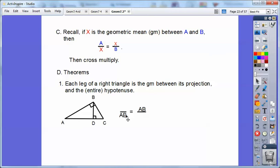So let's deal with leg AB right here. Bottom left, top right. AB is touching AD. So that goes right here. And then the whole hypotenuse is AC. So that's going to go in the other spot right there. So AB is the geometric mean between AD and AC.